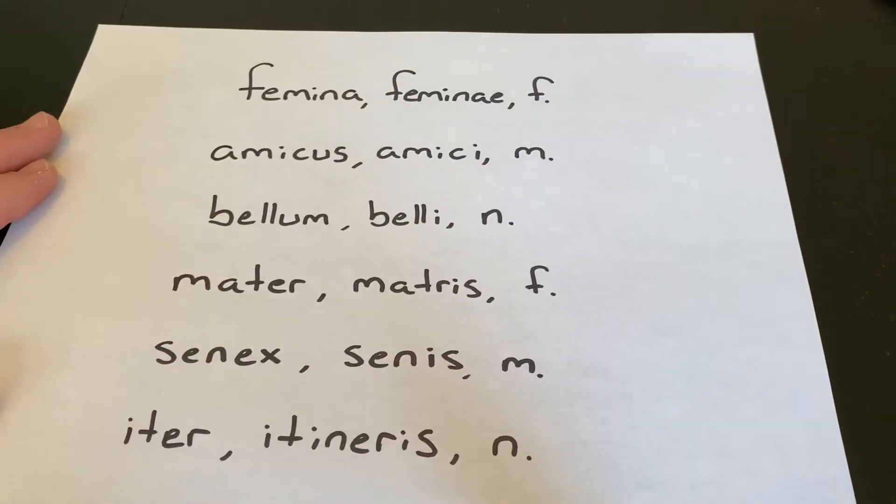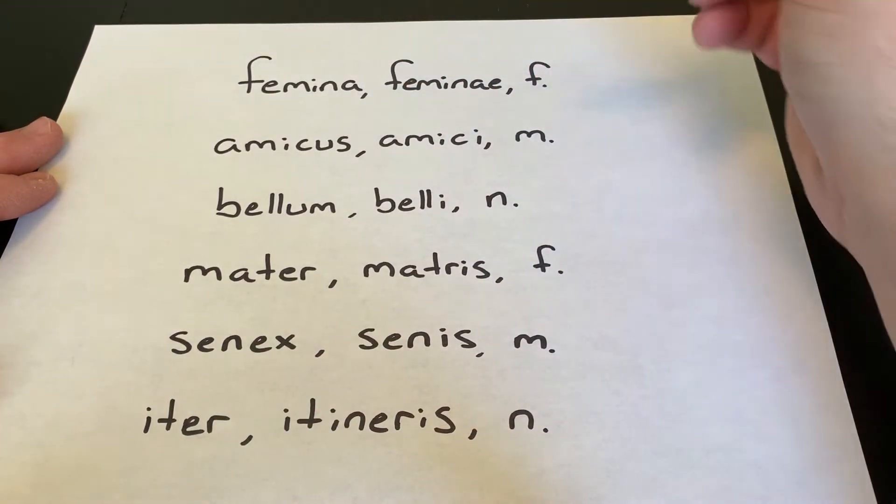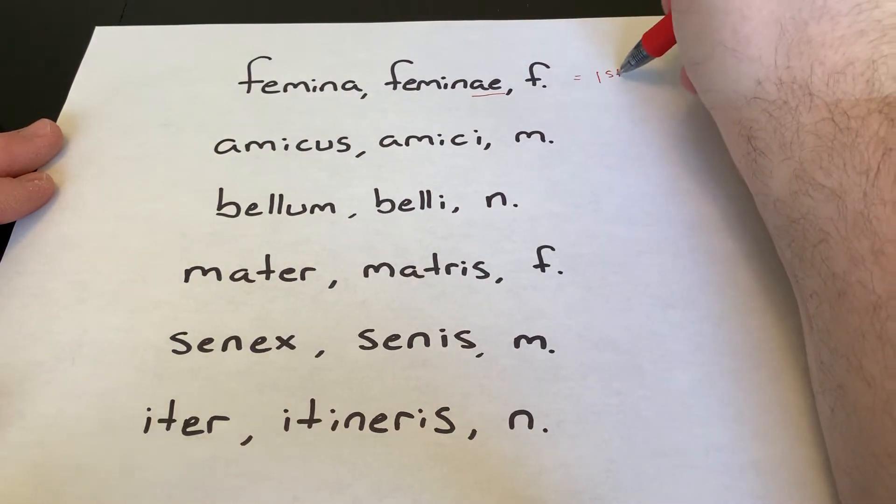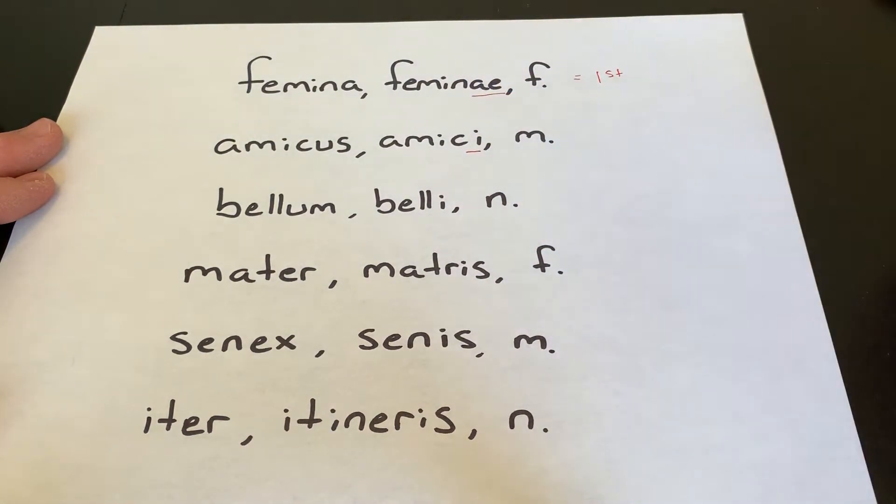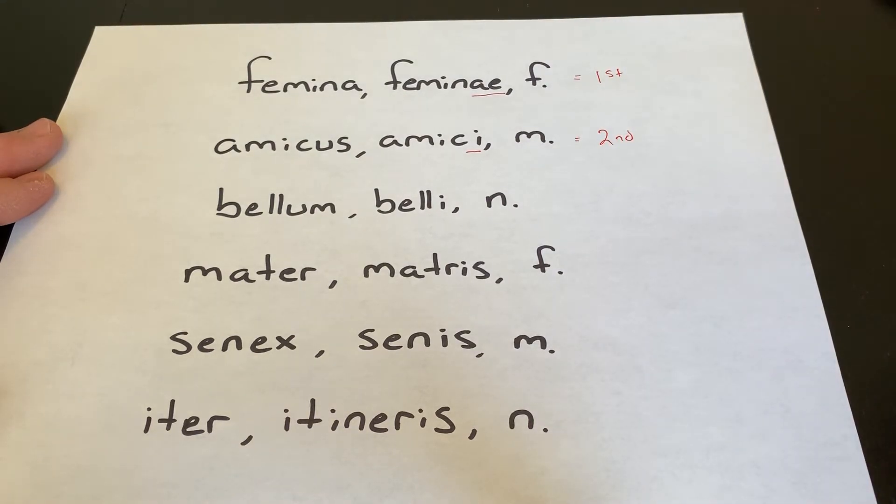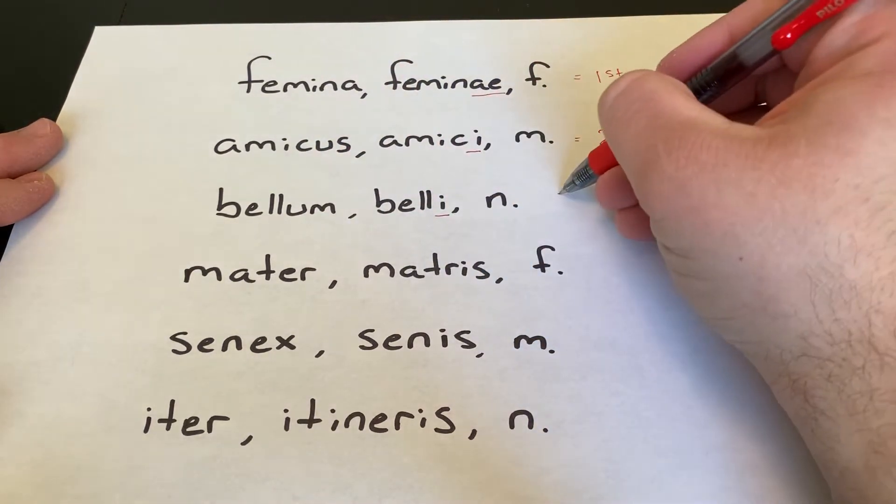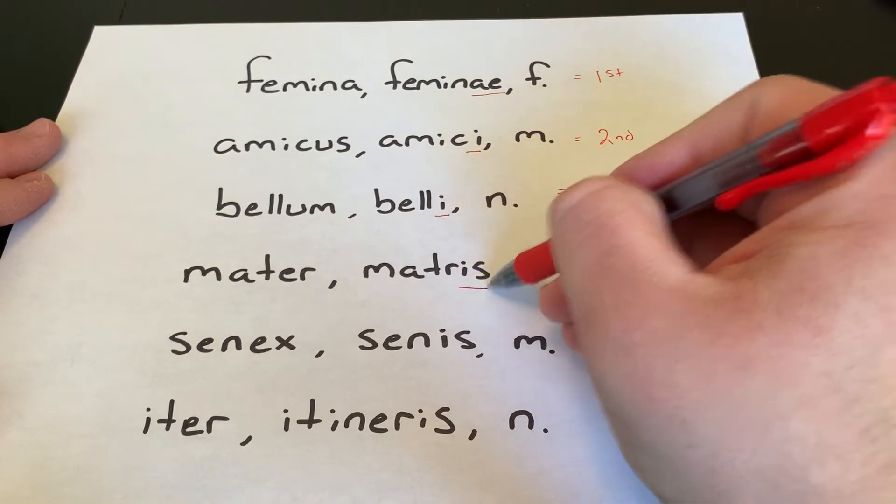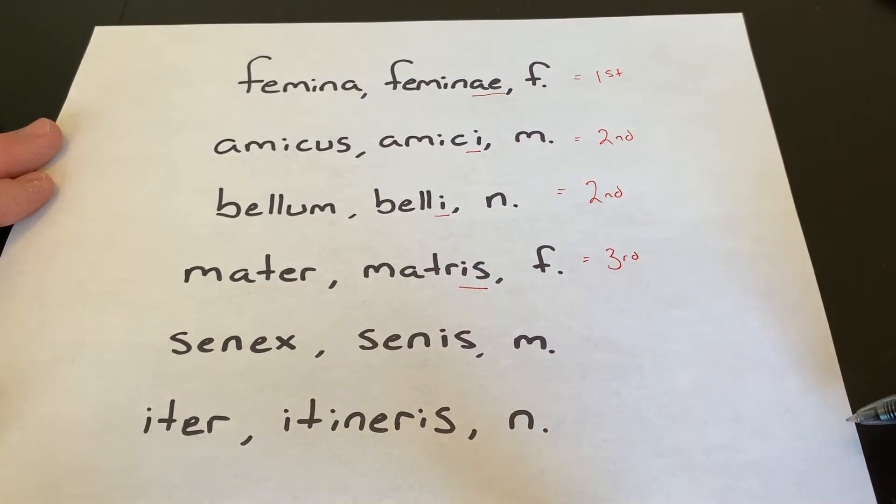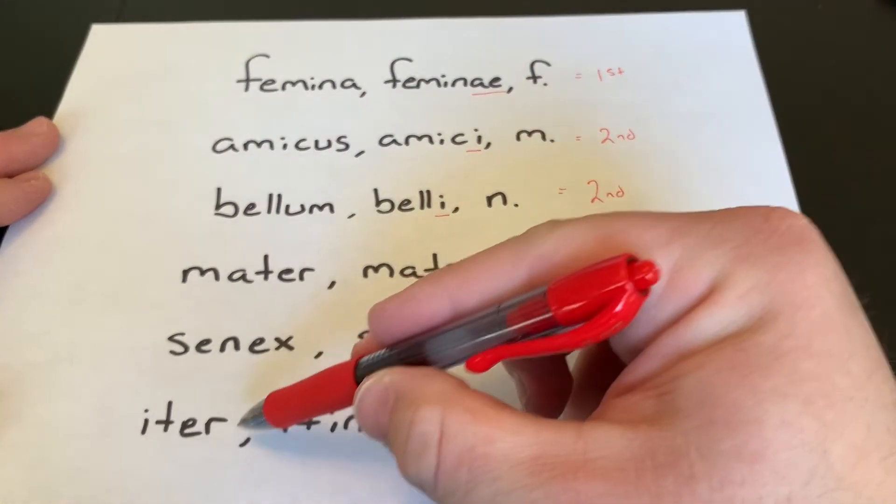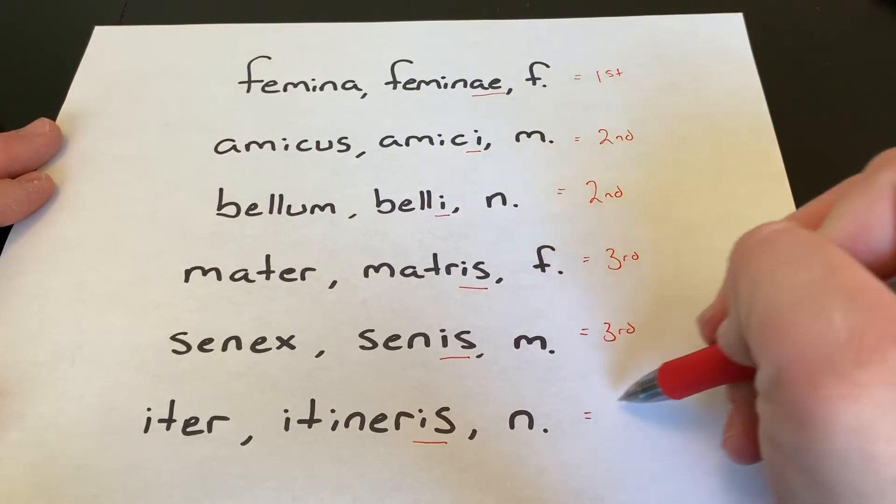So if we look back at the vocab list we can see femina feminae means it's first. Amicus amici, that I tells us that this is a second declension word. Bellum belli, that I tells us it's second as well. And we see mater matris, that tells us it is third. Same with senex senis that is also third. And iter itineris is also third.